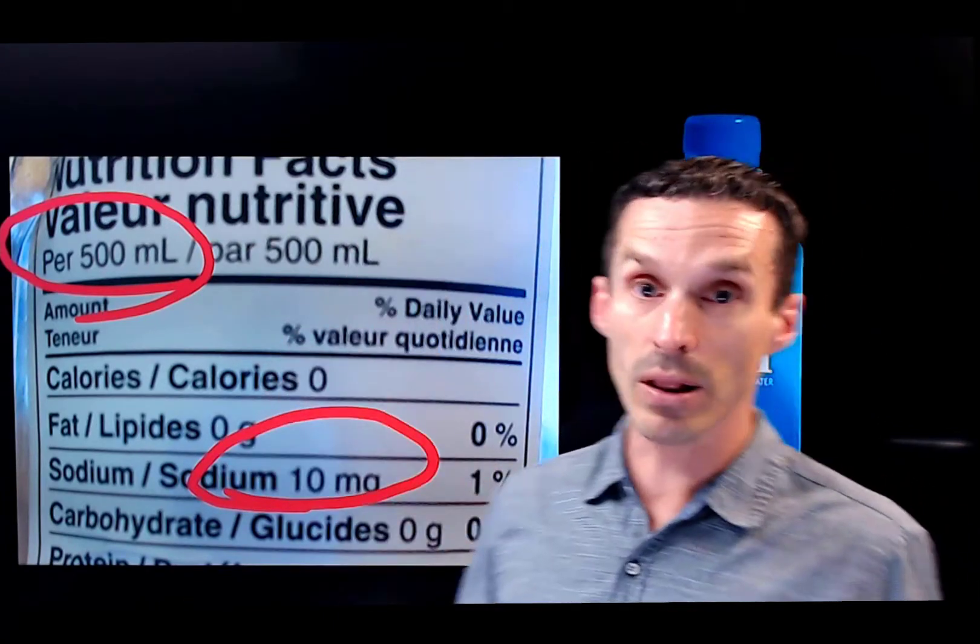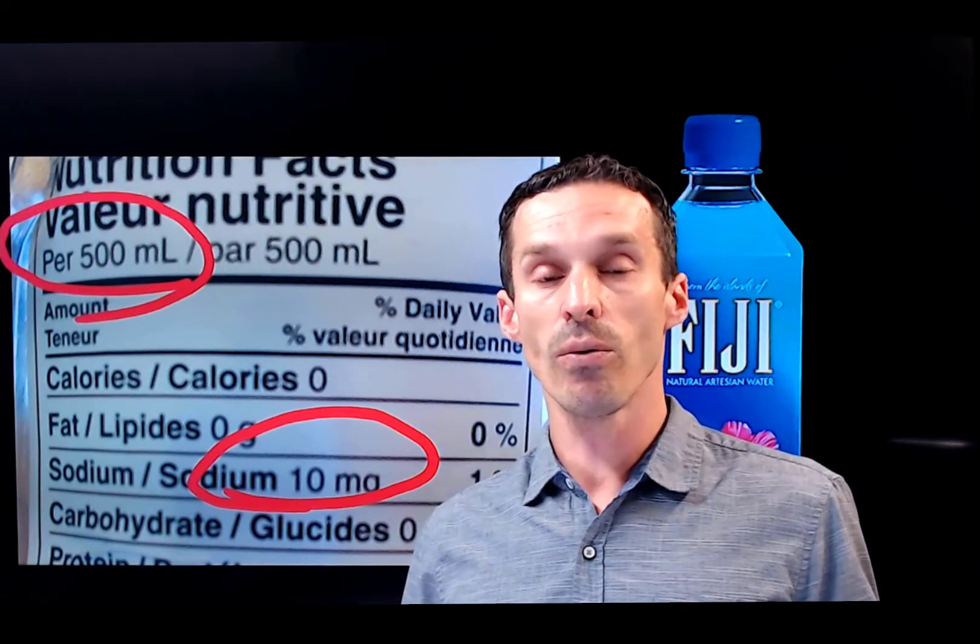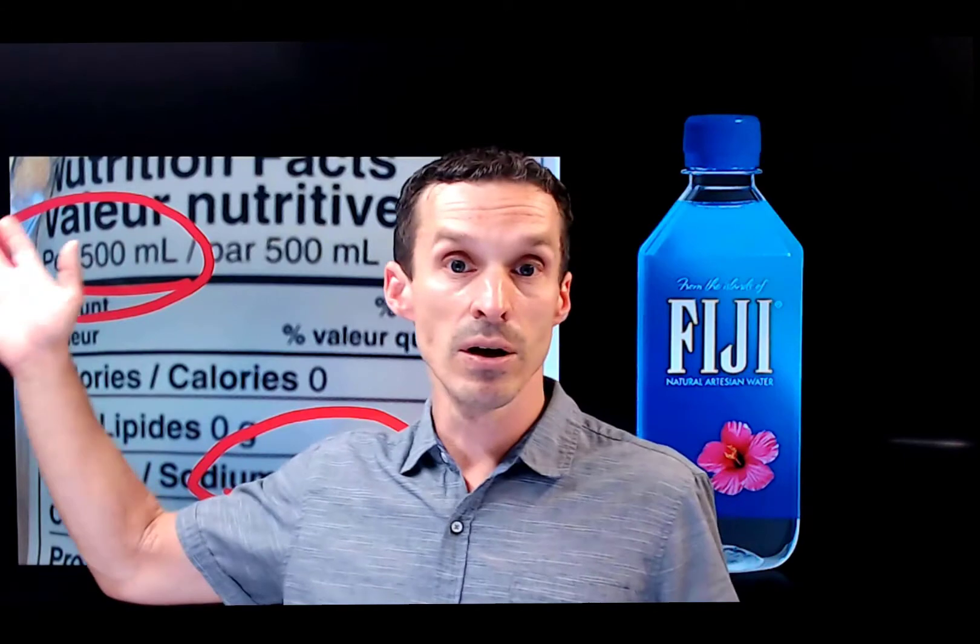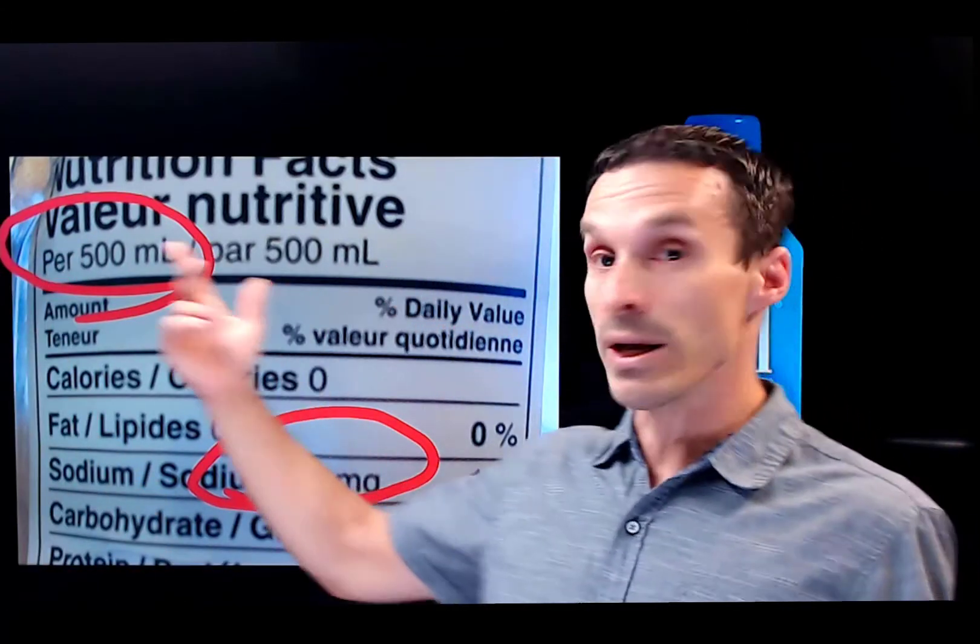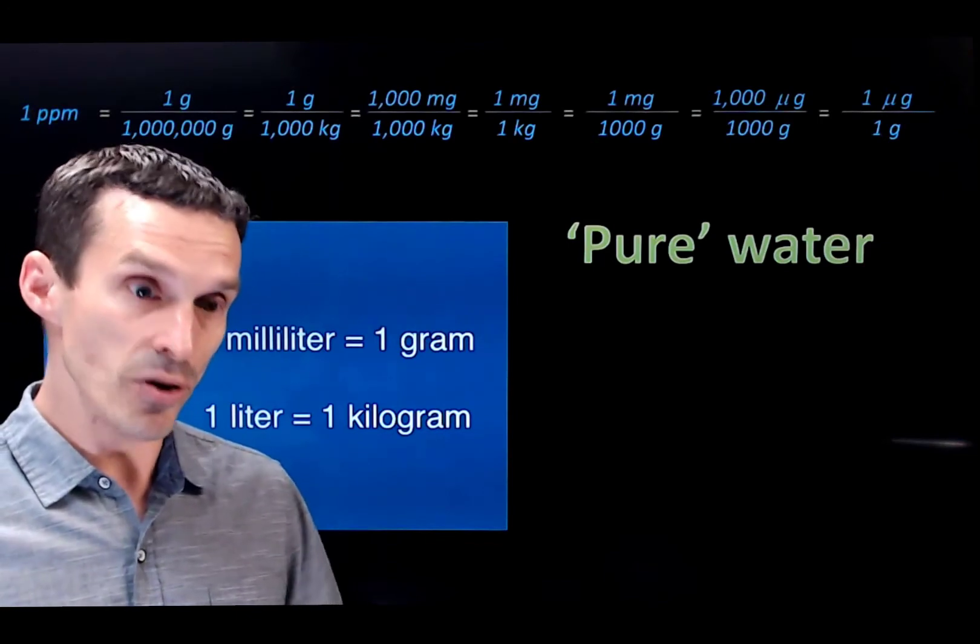So for example, here we've got a bottle of water, and it's talking about how much sodium is in a certain volume of the water. So there's a concentration hidden right there. 10 milligrams per half a liter, 20 mg per liter, right? Now,